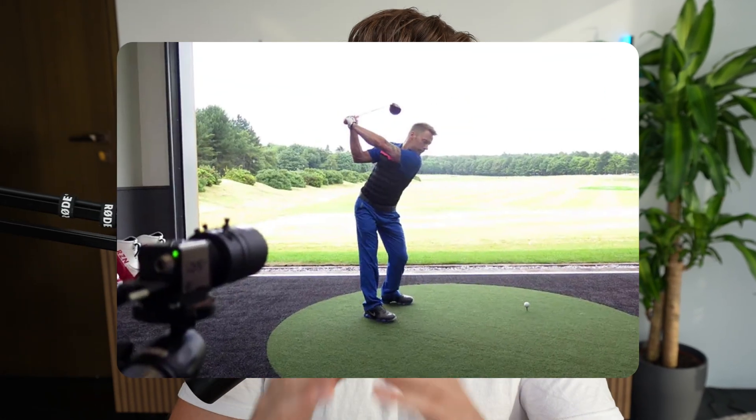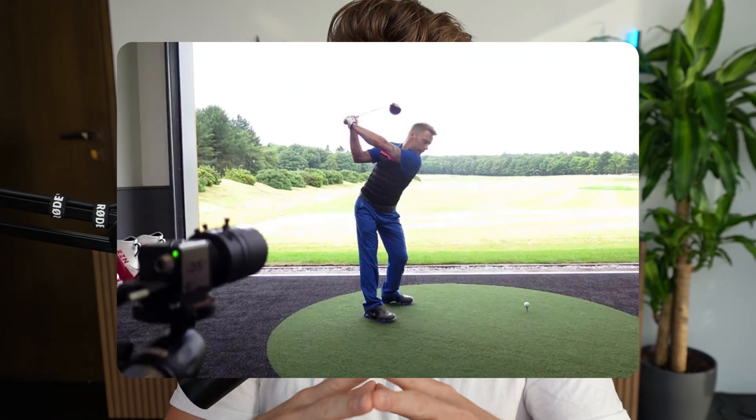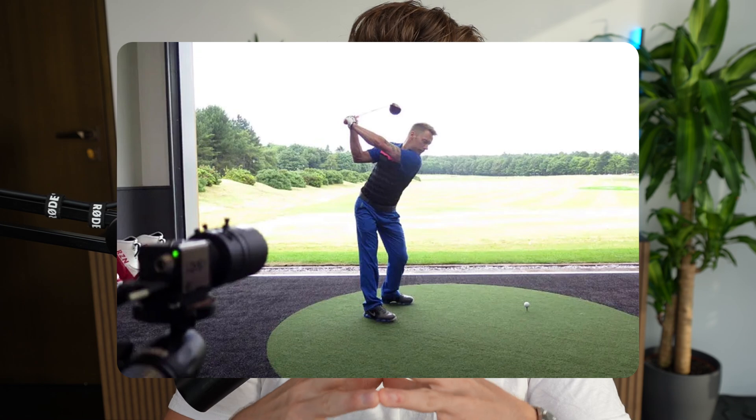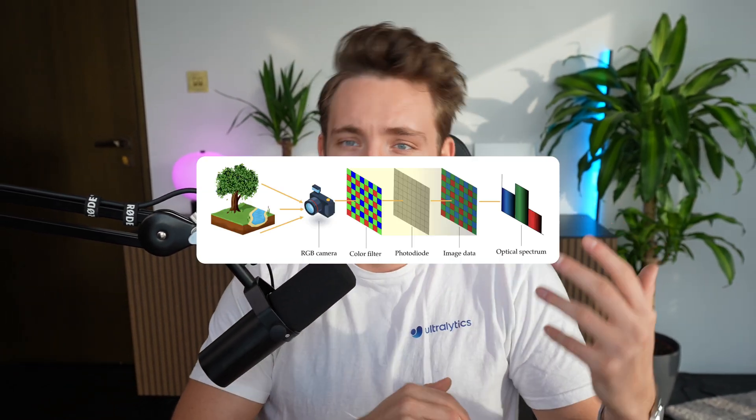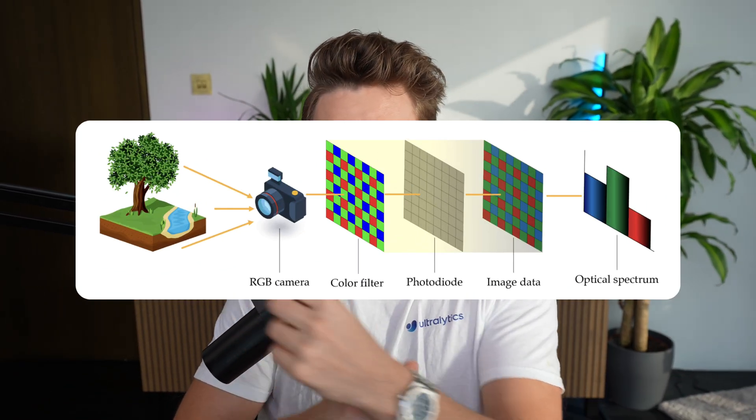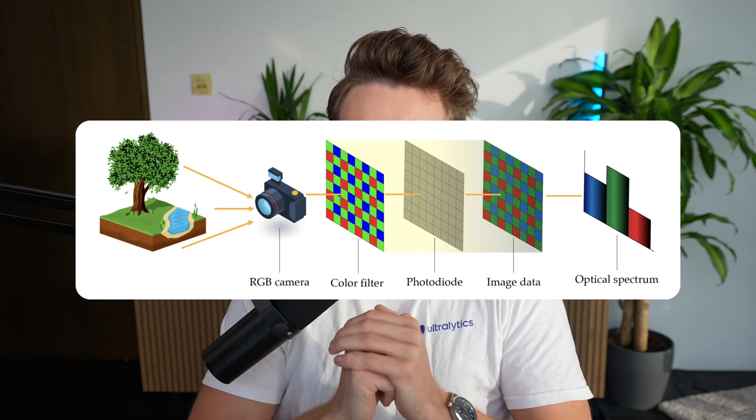How to choose the correct camera for your computer vision applications and projects. In this video we're going to explore different options, talk about different camera types, different types of images, the pros and cons of using different cameras, and what cameras you should use for specific use cases.